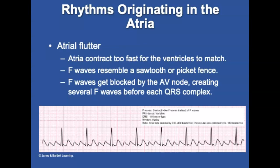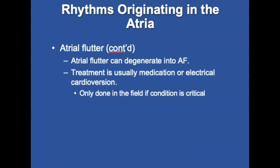Atrial flutter is a rhythm in which the atrial impulse fires at a rate too fast for the ventricles to keep up. Atrial complexes are known as flutter waves or F-waves, with a distinct sawtooth shape resembling a picket fence. One or more F-waves get blocked in the AV node, resulting in several F-waves before each QRS complex. The rhythm is usually regular, with QRS complex measuring 0.11 seconds or less. Atrial flutter can degenerate into AFib; patients are often prescribed anticoagulants. A beta blocker or calcium channel blocker may be given if the patient is stable; synchronized cardioversion may be necessary if unstable.